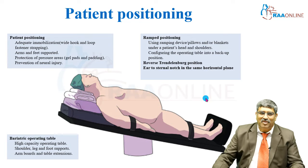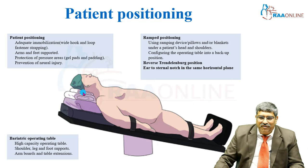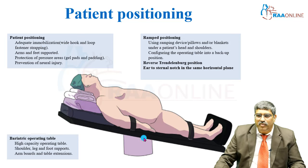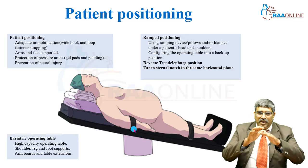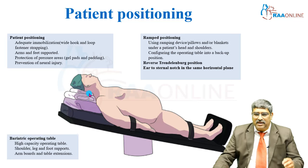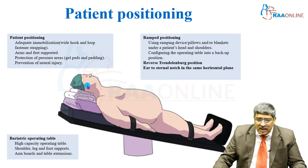To summarize patient positioning: use a slight head-up reverse Trendelenburg position with enough padding under the head — the ramp position — with adequate immobilization using wide boards and loop-fastener strapping. Arms and feet should be adequately supported, all pressure areas protected with cotton padding, and neural injury prevented. In the ramp position, keep a pillow or blanket under the patient's head so that the ear and sternal notch are in the same line.